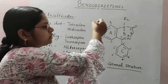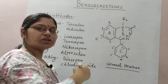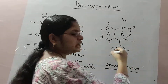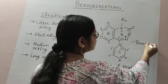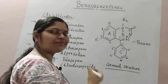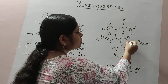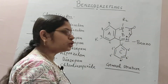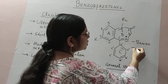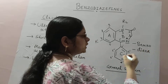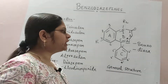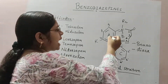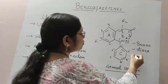Now, why has the term Benzodiazepines been given for this structure? Because ring A is an aromatic benzene ring, hence the term 'Benzo' is used. Ring B is a seven-membered unsaturated ring having two nitrogens — the first nitrogen at position one and the second at position four — hence it is 'Diaza.' In heterocyclic nomenclature, two nitrogens give 'Di,' and the seven-membered unsaturated ring gives 'epine.'